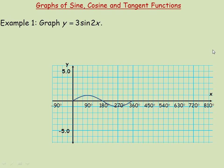In this lesson, we'll take a look at the graphs of the sine function, the cosine function, and also the tangent function. In this first example, we're asked to graph y equals 3 sine 2x. What's written on the graph here is the normal y equals sine x function — no transformations whatsoever, just a basic sine curve.